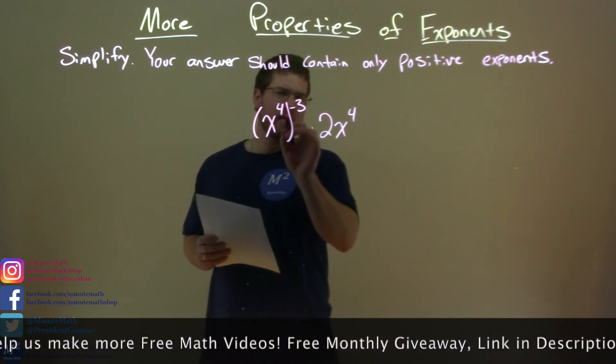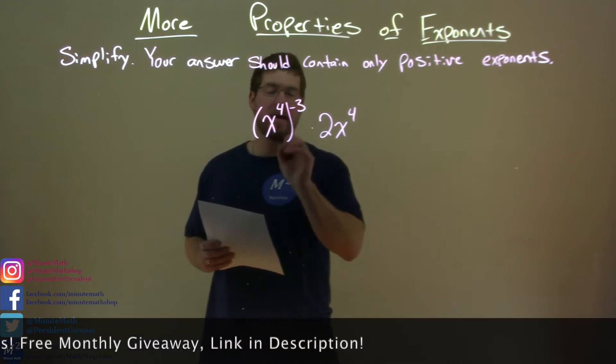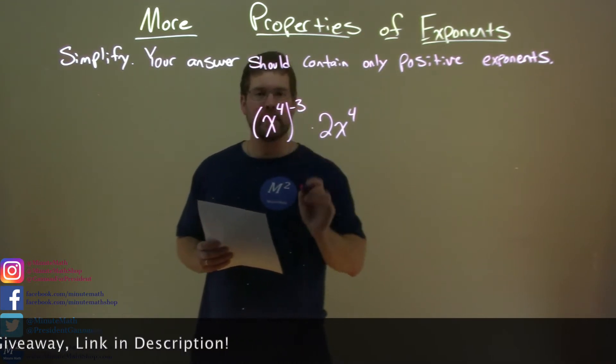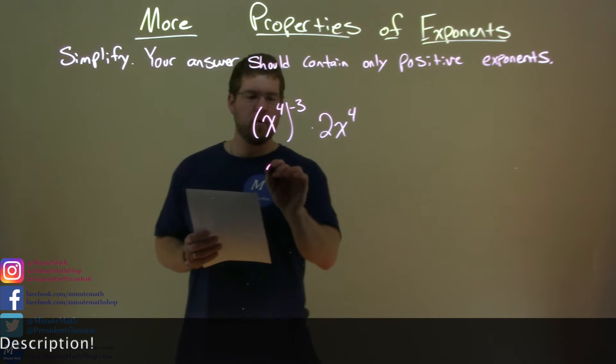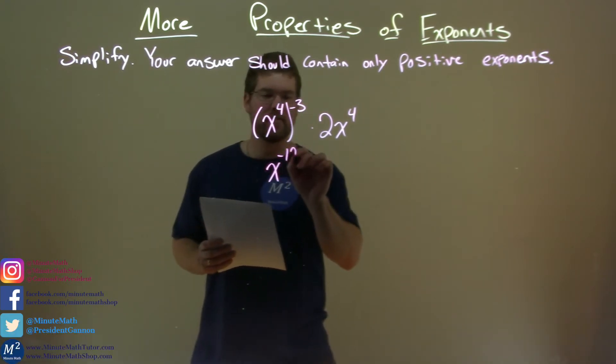Well, first thing here on the left, I have x to the 4th power to the power of negative 3. There, we multiply the exponents. So we have x to the 4 times negative 3, which is negative 12.